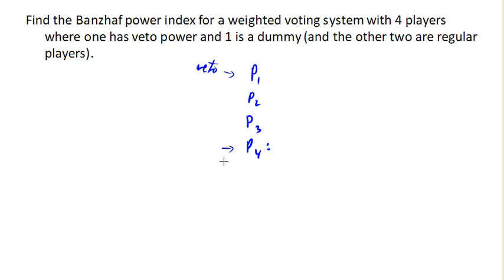So player four here is going to be our dummy. And so when we total up the number of times each player is critical, I know player four is never going to be critical in any coalition. Now, as for the other players...